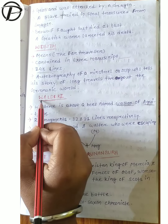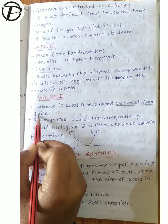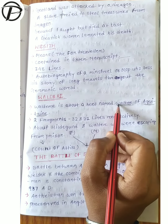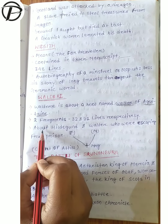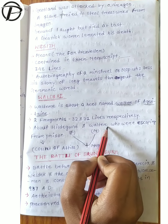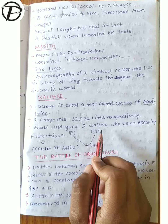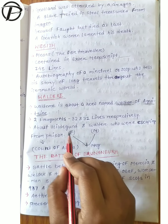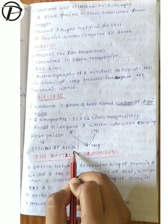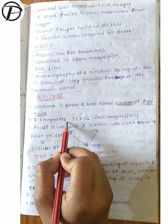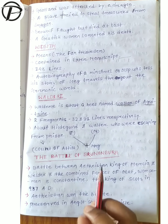The next important work is Waldere. Waldere is about a hero named Walter of Aquitaine. Aquitaine is the name of a place and its hero is Walter. It is also about Hildegund and Walter's story, where they escaped from a prison - the court of Attila - and at last they both got married. It is divided into two fragments: the first of 32 lines and the second of 31 lines.